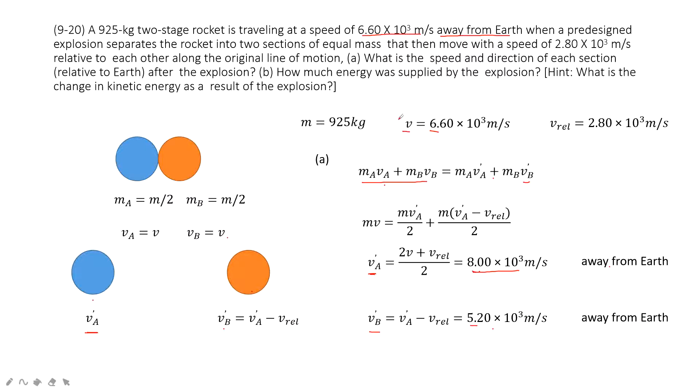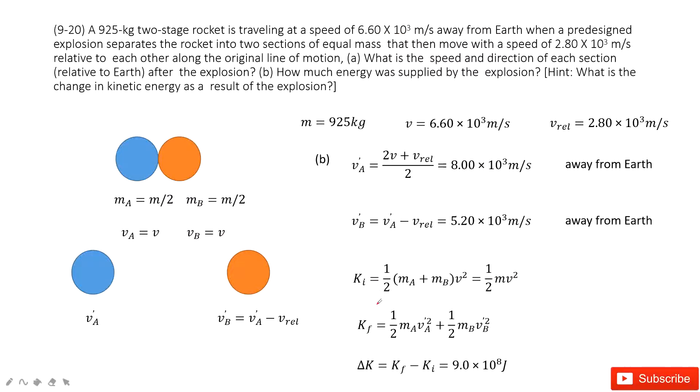The second problem asks you how much energy was supplied by this explosion. So that means we need to find the change in kinetic energy. So we find the initial kinetic energy, final kinetic energy, and then use the final kinetic energy minus initial one, we get the change of kinetic energy.